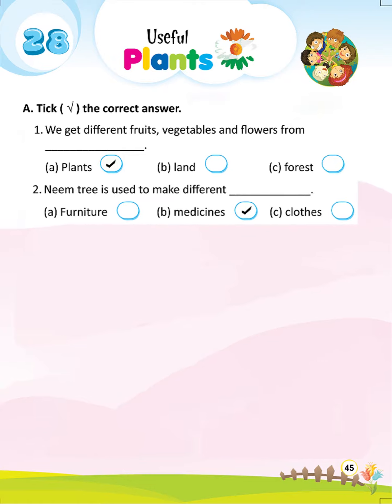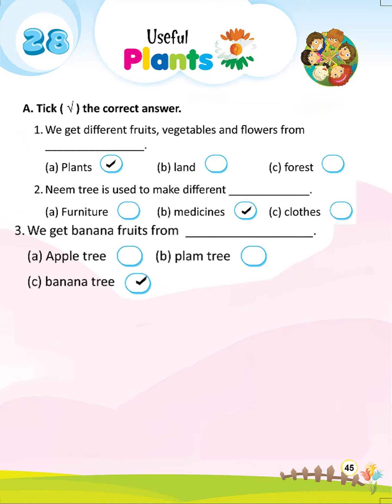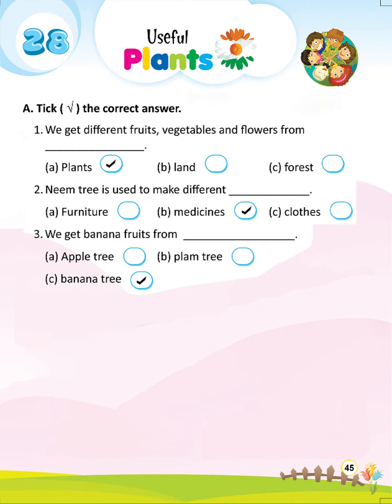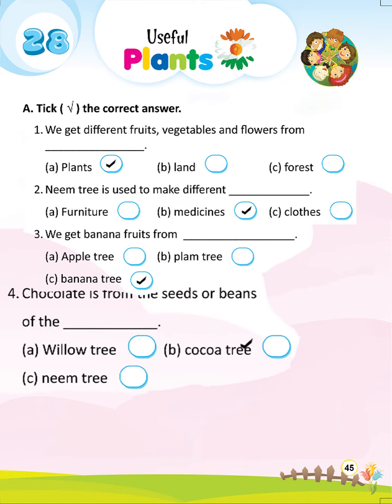Question 2: Neem tree is used to make different — B. Medicines. Question 3: We get banana fruits from — C. Banana tree.